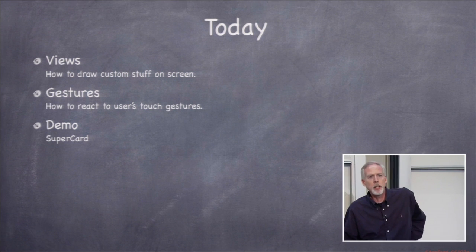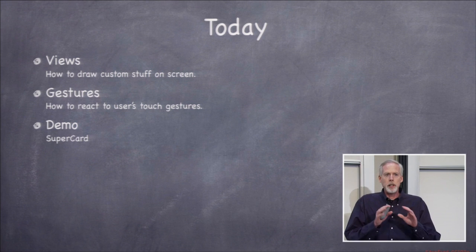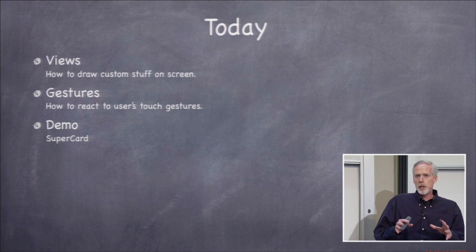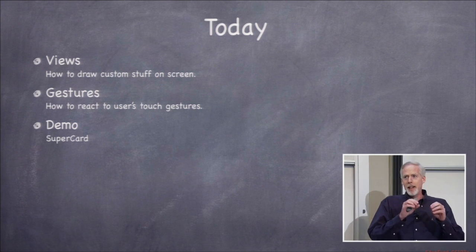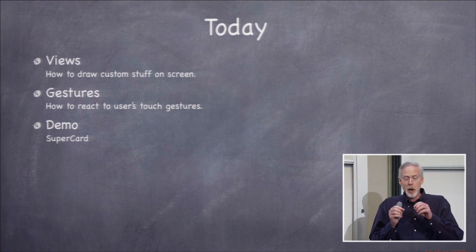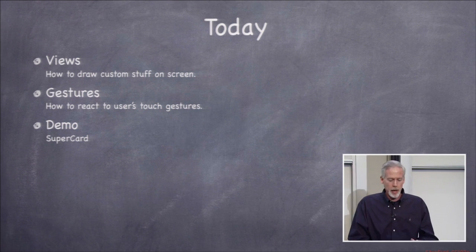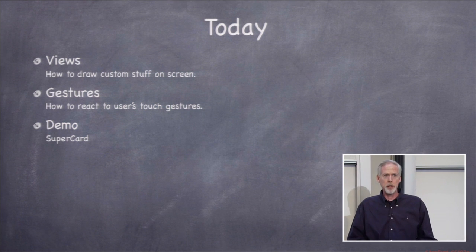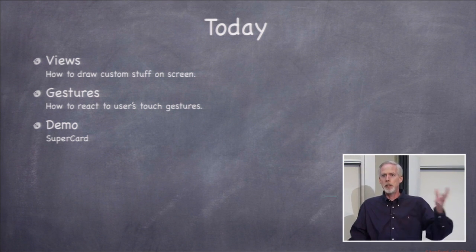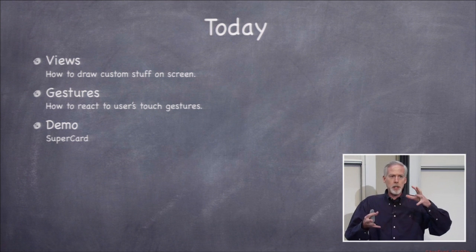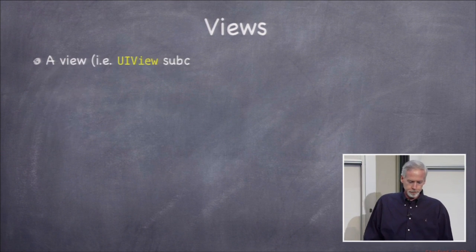We're basically going to draw cards that we used in Machismo that were really bad — like 'A clubs.' They didn't look like cards, so we're going to actually have a custom view that looks like a card, with the things in the corner, face cards, all that.